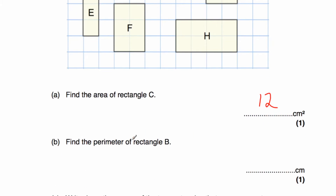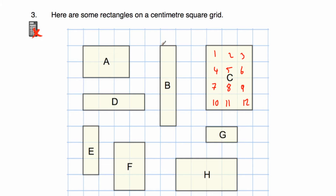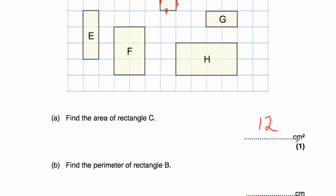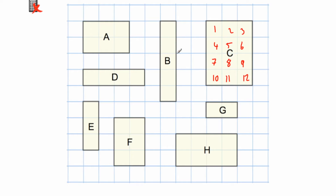Part B says: find the perimeter of rectangle B. The perimeter is the distance around the outside of the shape. Counting around rectangle B on the centimetre grid: going across one, then down five gives six centimetres; across one more is seven, then up gives twelve total. Alternatively, rectangle B has a height of five centimetres on each side and a width of one centimetre on top and bottom: five plus five plus one plus one equals twelve centimetres.